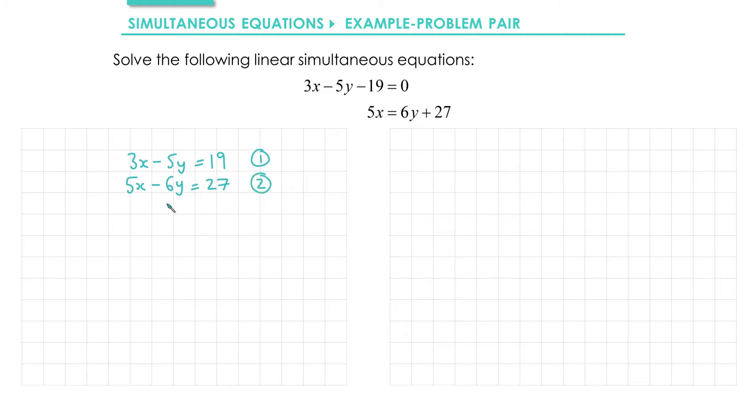The next step is to manipulate both equations so that they either have the same number of x's or the same number of y's. Which one you choose is up to you, but in general you want to try and keep the multiplications as small as possible, so I'm going to get the same number of x's.